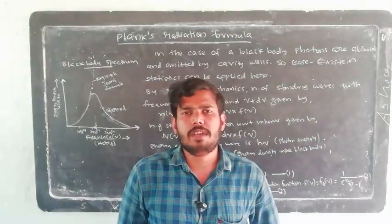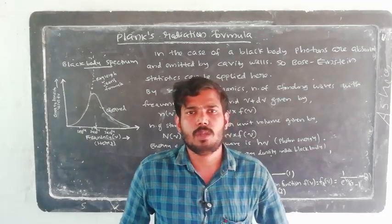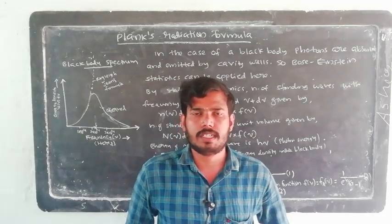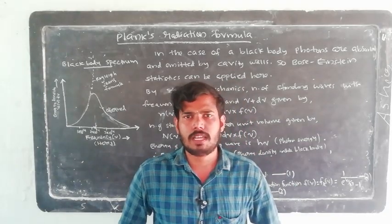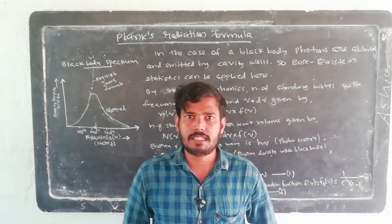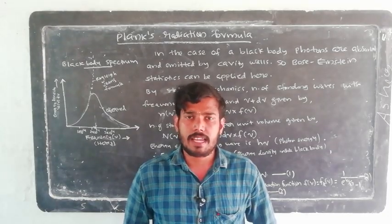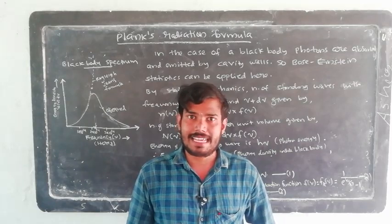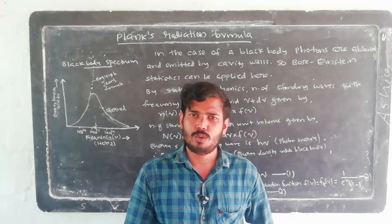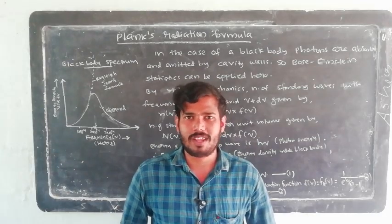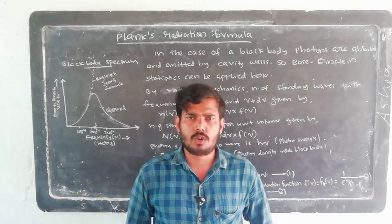Hi students, in the previous video we explained the black body spectrum. We obtained the Rayleigh-Jeans formula. But the Rayleigh-Jeans formula cannot explain the high frequency range of the black body spectrum. In the ultraviolet range, the energy density decreases as frequency increases, but in the formula, U(ν) increases. This discrepancy is called the ultraviolet catastrophe. Now we have to solve this ultraviolet catastrophe.